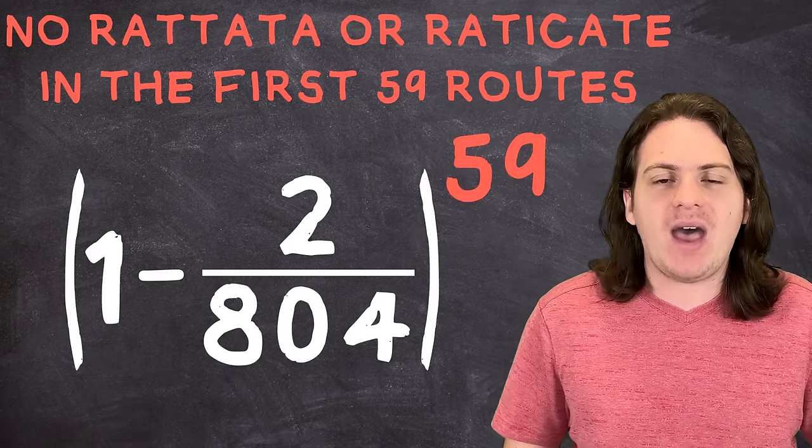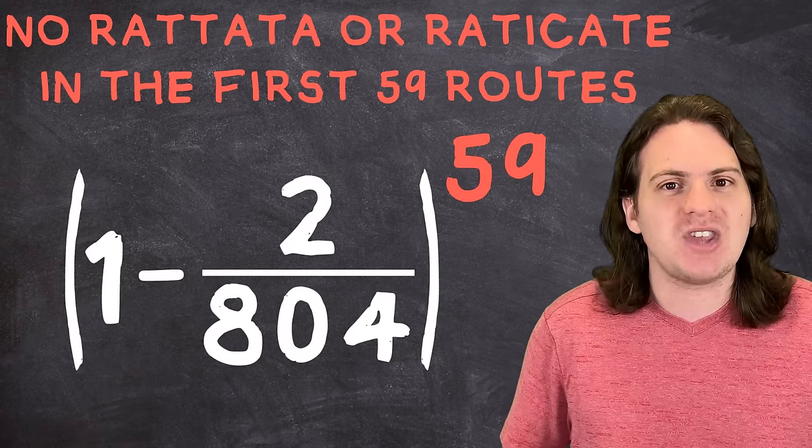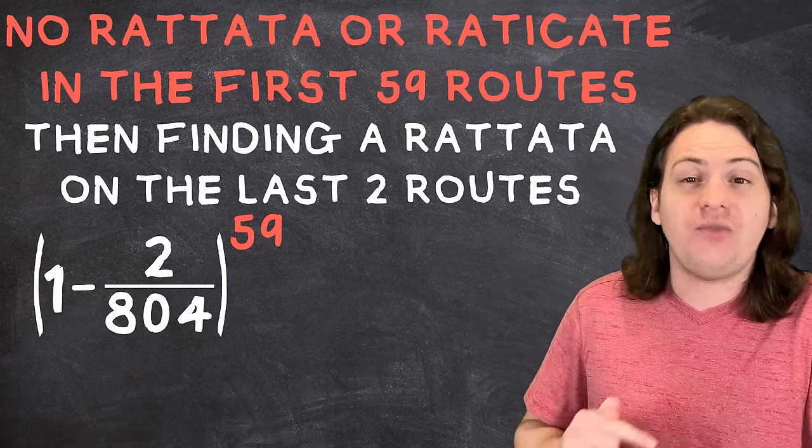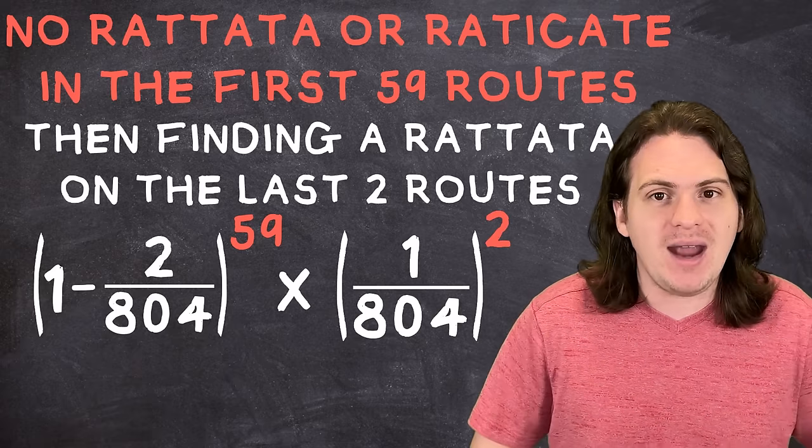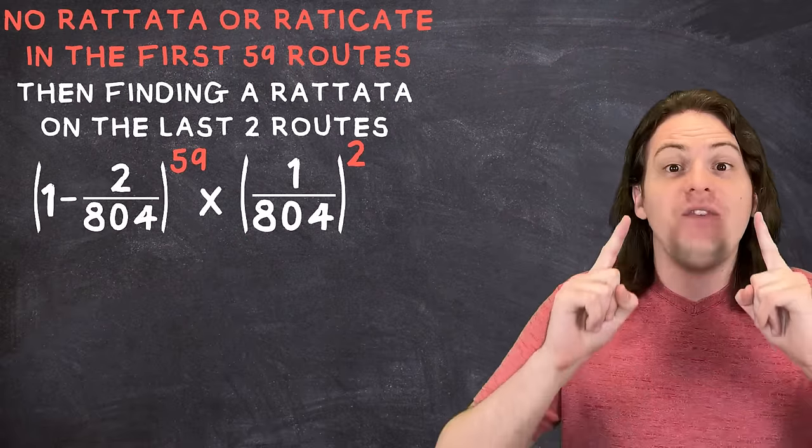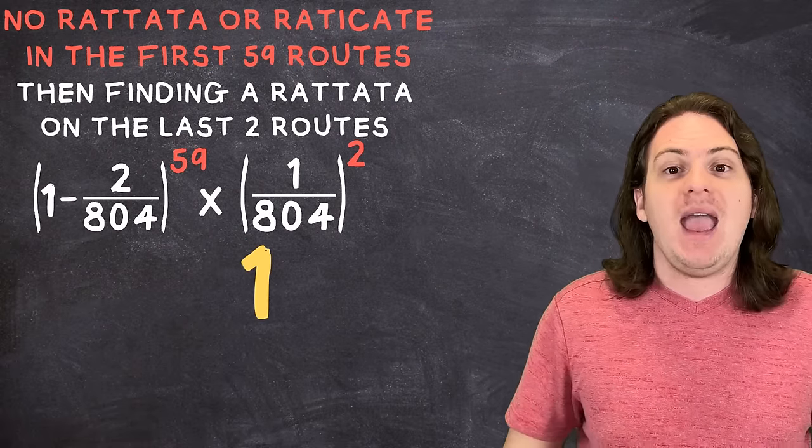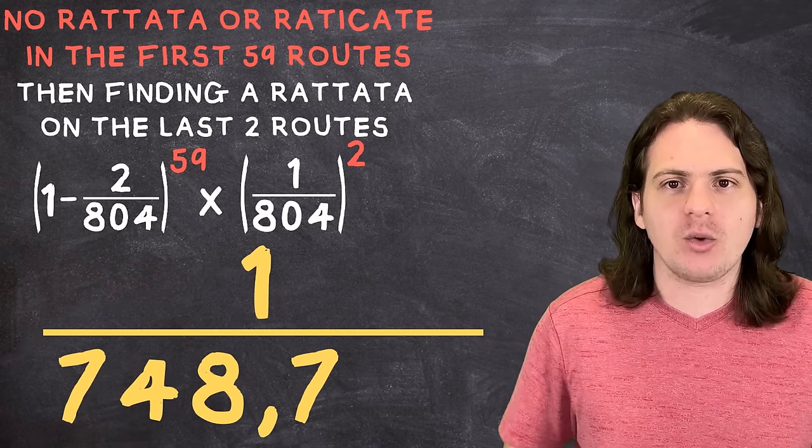Then, to find the odds of not finding a Rattata or Raticate on the first 59 routes and then finding a Rattata on both the final two routes, we just need to multiply these two together to find that the true odds of this unholy occurrence is a whopping 1 in 748,740, or just 0.000013%.